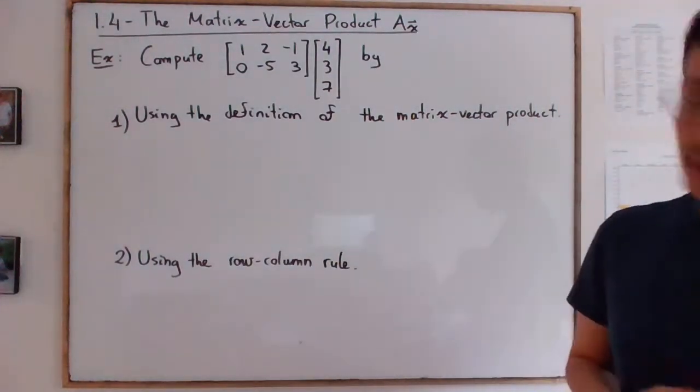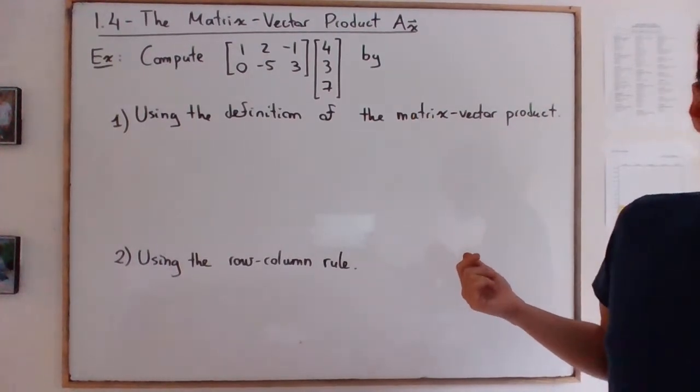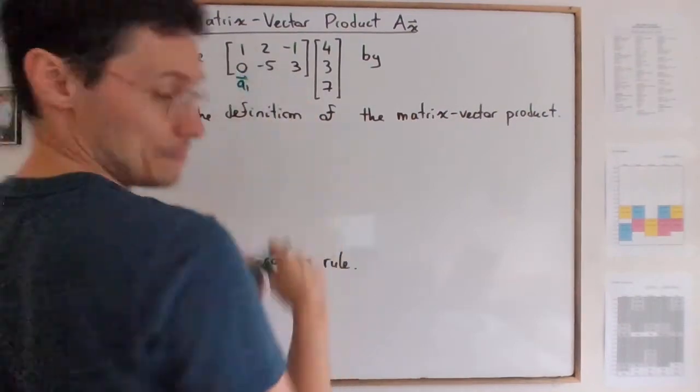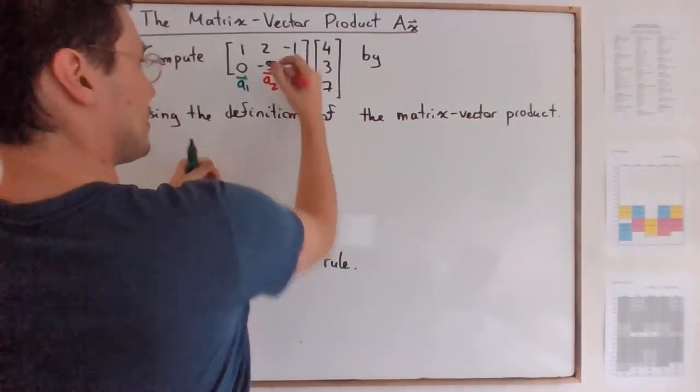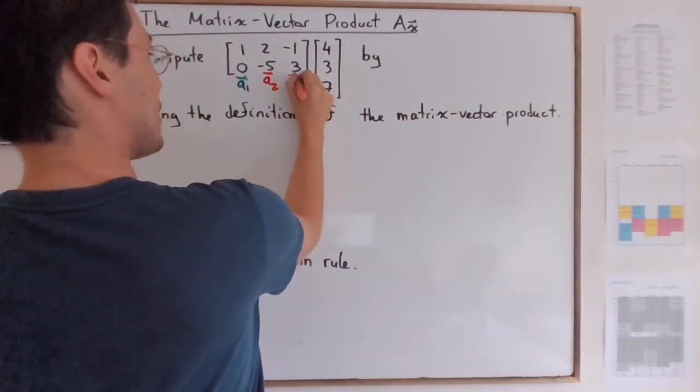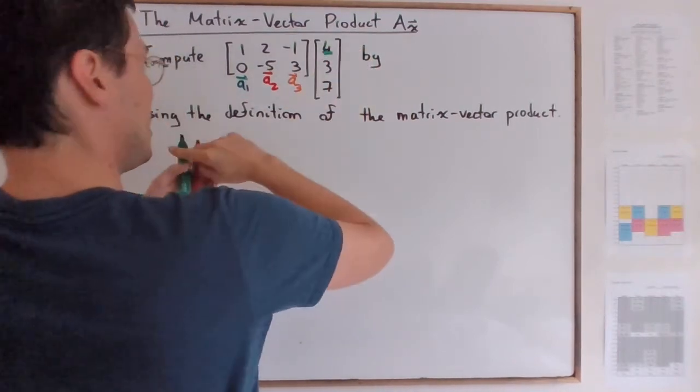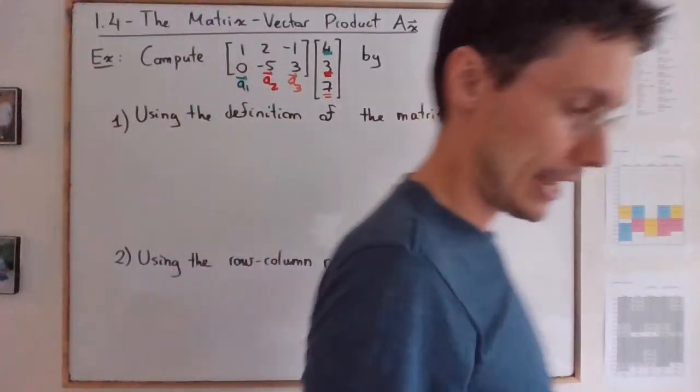Using the definition of the matrix vector product, remember what you need to do is this is the vector A1, this is the vector A2, and this is the vector A3. And remember, you have the corresponding X1, X2 and X3.